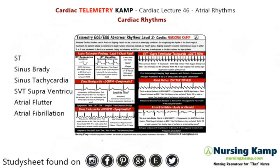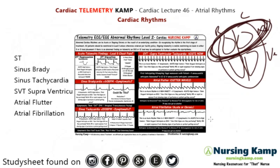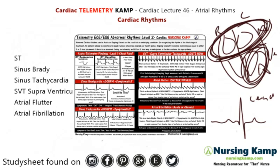So with atrial rhythms, what's going on is that we're looking at the heart and the heart is separated into four parts. We have a right side and a left side, we have the atria and then we have the ventricles. The focus is on the atria, and with the ECG we monitor in lead two. The reason we monitor in lead two is that we're looking at the left ventricle and it should look like this.